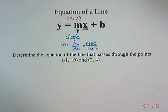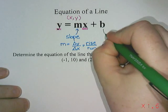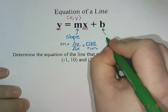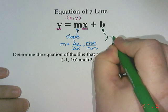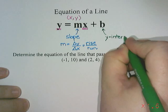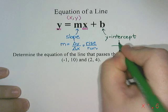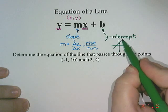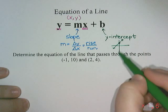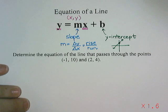And then our last letter is the letter b which is the y-intercept. And a y-intercept is where your line crosses the y-axis. So where your line passes through that vertical y-axis is your y-intercept.